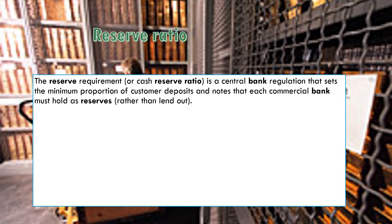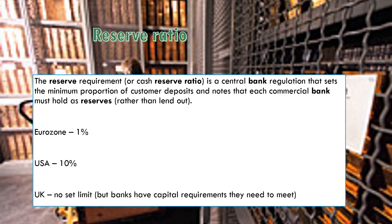The reserve ratio, or reserve requirement, is a central bank regulation that sets the minimum proportion of customer deposits and notes that each commercial bank must hold as reserves. Of all the money they receive from depositors, the central bank — so the Bank of England, ECB, or Federal Reserve in America — would set a ratio, a percentage, saying that amount has to stay within the bank and you can't lend it out. For example, in the Eurozone it's 1%, in the United States it's 10%, and in the UK there's no set limit but there are some requirements that UK banks need to meet.